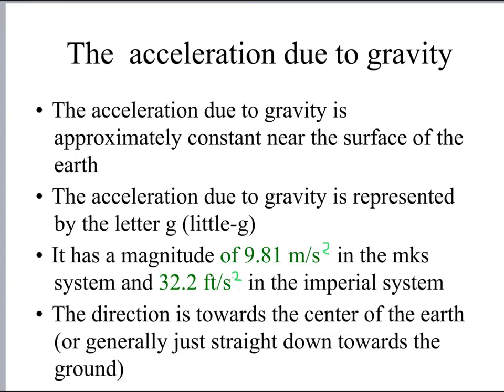So let's sum up. The acceleration due to gravity near the surface of the earth is approximately constant, and the acceleration due to gravity is represented by the letter little g, and it has a magnitude of 9.81 meters per second squared. That's in the metric system, the MKS system, and it has a value of 32.2 feet per second squared in the imperial system. And so we're going to be predominantly using the MKS system, and so that value of 9.81 meters per second squared, that's one that you're going to want to memorize, but don't worry. You're going to see it so much, you won't be able to not memorize it even if you tried.